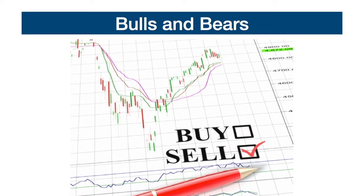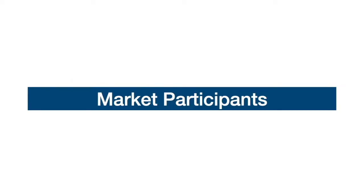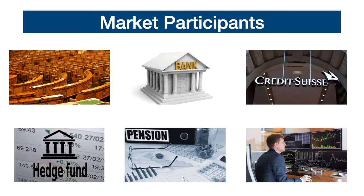The bears, on the other hand, are the sellers who speculate on the decline of a given asset. Their purpose is to sell high and buy low to make a profit. The Forex market is divided into various access levels based on the size of the transactions. The main participants in this market are governments, central banks, commercial banks, investment funds, pension funds, and private investors.